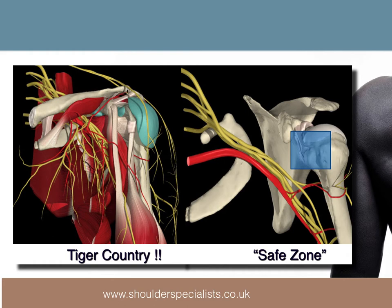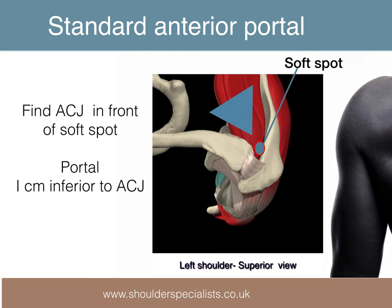Anterior arthroscopic portals are always made in the safe zone lateral to the conjoint tendon to avoid risk of damage to important nerves and blood vessels. The standard anterior working portal for access to both the glenohumeral and AC joints is located just in front and about 1 cm inferior to the front of the AC joint.